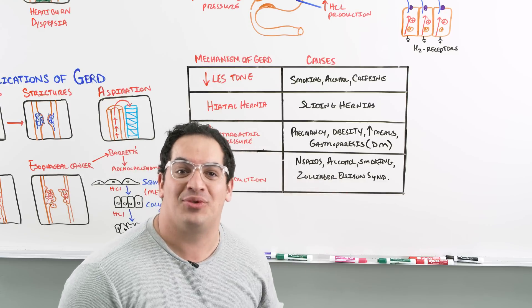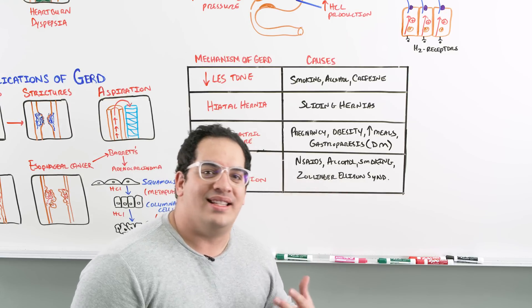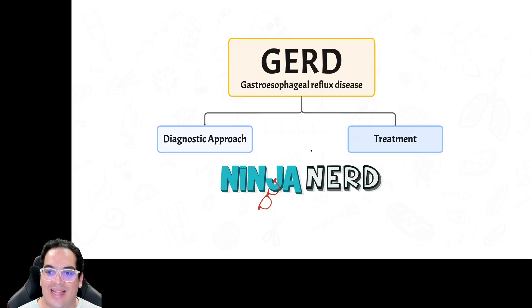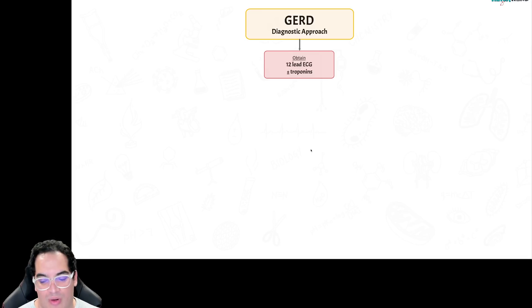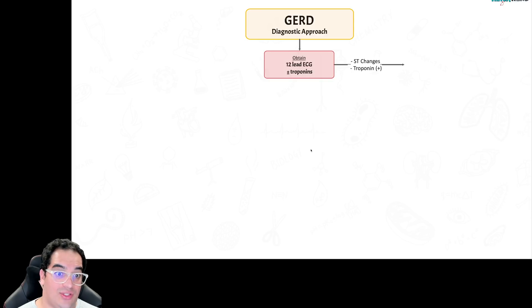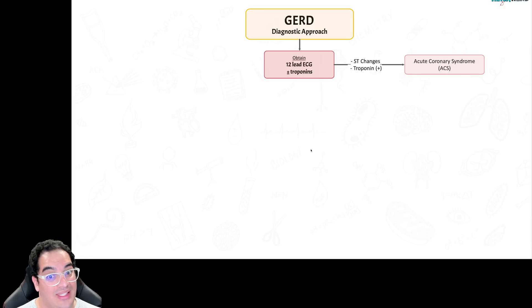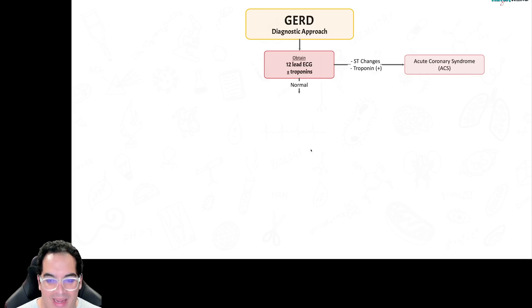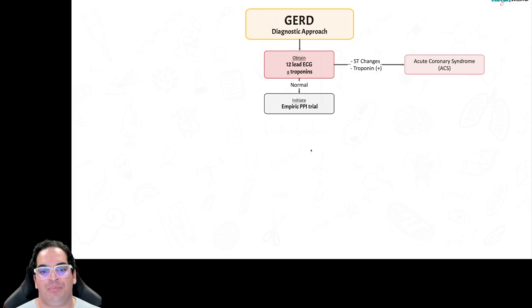Now let's go through the diagnostic approach. For a patient we suspect has GERD, the first thing to do is obtain a 12-lead ECG with troponins to make sure the patient doesn't have an acute coronary syndrome, since retrosternal chest pain can be an atypical ACS presentation. If ECG is normal, initiate an empiric PPI trial — if symptoms improve, that's supportive of GERD.